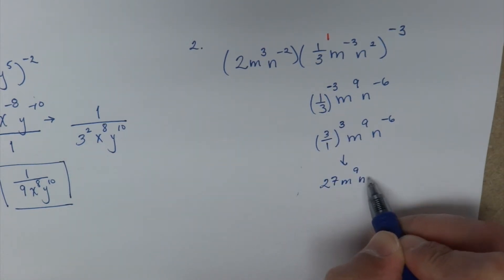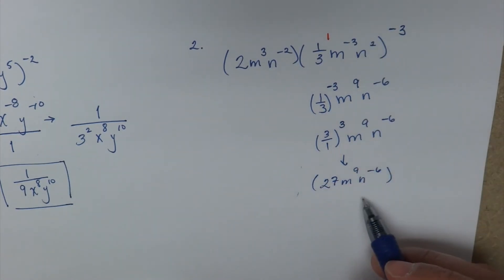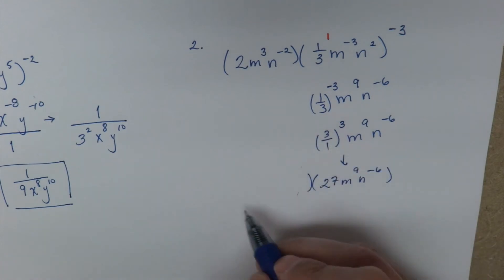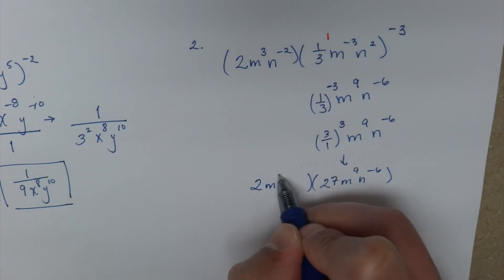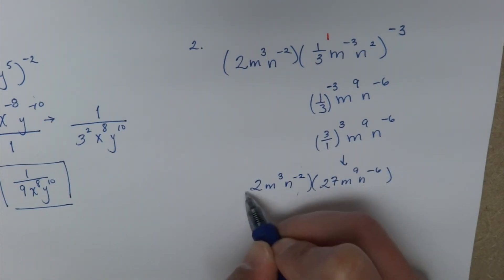Now 3 cubed becomes 27, m to the 9th and n to the negative 6. Now remember, that's the first part, we're done with this guy, now we have this first expression in the front, 2m cubed n to the negative 2nd.